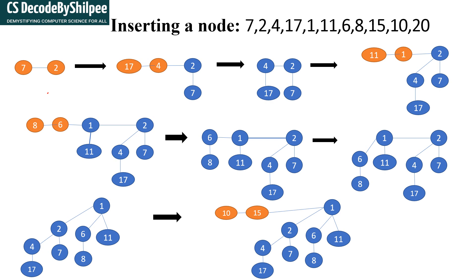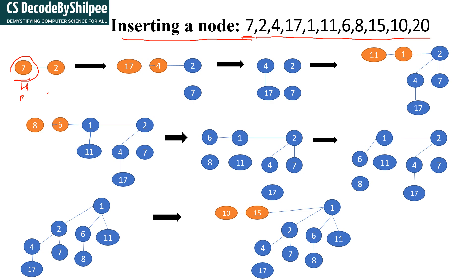In this video I am going to explain the insertion operations in a binomial heap. Given some elements, I am going to insert all these elements in the binomial heap. First I will create a binomial heap with the first element, which is 7. I am assuming this is my binomial heap H with a single element 7, and its degree is 0.